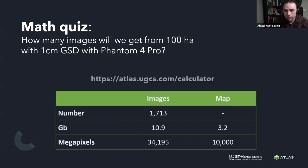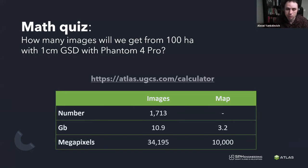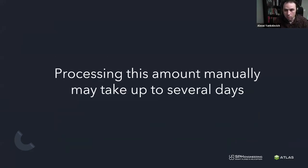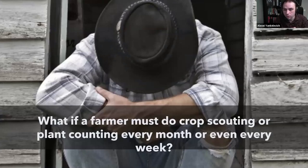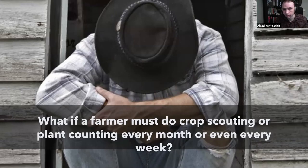If we do a simple math exercise and translate hectares into image properties: for one hectare with one centimeter GSD with a Phantom 4 Pro, we get around 1,700 images which will be converted into a map of about three gigabytes and approximately 10,000 megapixels. We have a megapixel calculator on our website so you can make a rough estimate for your survey. Processing and inspecting this field manually, pixel by pixel, can be complicated. If you have several fields, such inspection could take up to several days. What if a farmer must do crop scouting or plant counting every month or every week? We get to a situation where we have to work with dozens or even hundreds of gigabytes of orthomosaics.